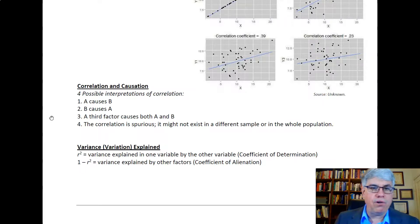Those are the four possible causal explanations of correlation: A causes B, B causes A, a third factor causes both A and B, or the correlation is spurious and it doesn't really exist in the population.